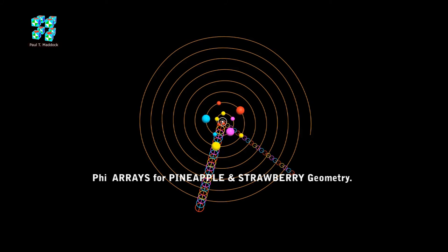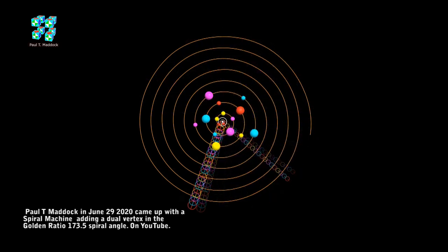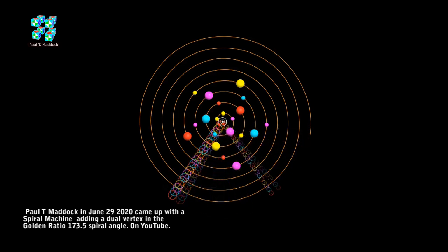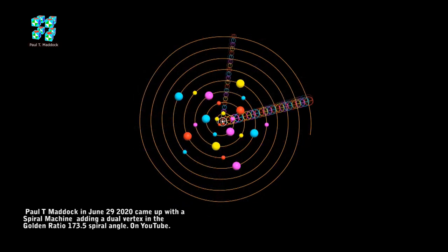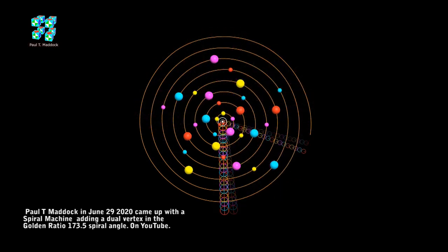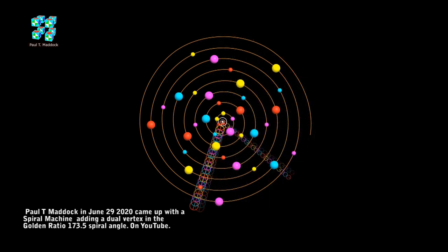Hi, this is Paul again. I've got a new video to show you, and I'm calling this Fire Rays for Pineapple and Strawberry Geometry. Just over a couple of months ago, I put a video out showing a little spiral machine. Now, instead of rotating a vertex around golden ratio 137.5, I split it in two, and I got better results.